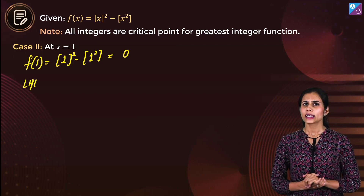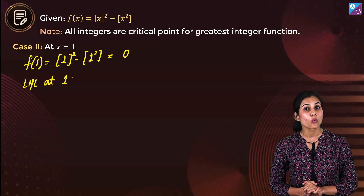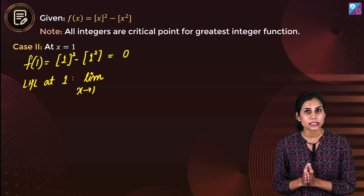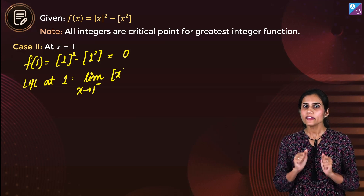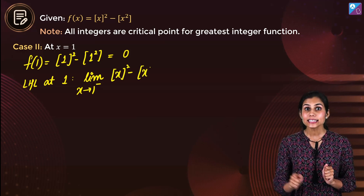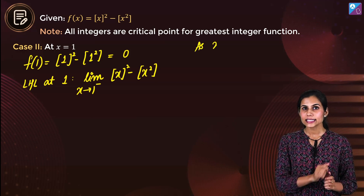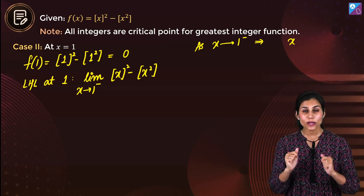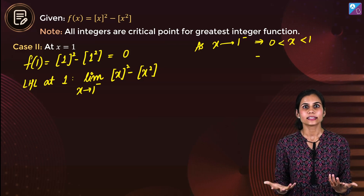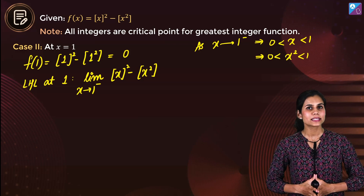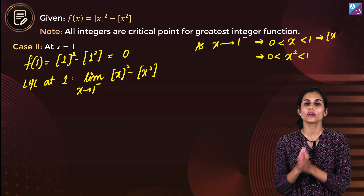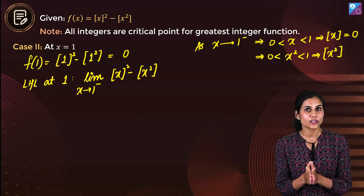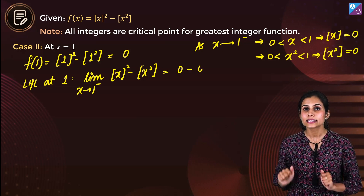Let's check the left hand limit of the function at 1. As x approaches 1 from the left, x is very close to 1 but less than 1 — strictly sandwiched between 0 and 1. So x² is also sandwiched between 0 and 1, meaning GIF(x) = 0 and GIF(x²) = 0. So the left hand limit of f at 1 comes out to be 0 − 0, that is 0.